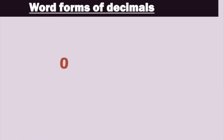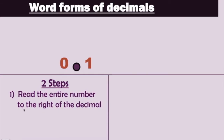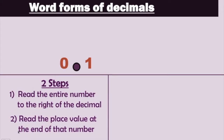So let's say that we have the decimal 0.1. Now keep in mind, when I say 0.1, I read it like that because it's a lot faster than the proper way, and because a majority of people in the world say it using the decimal point. But that's not the proper way to read a decimal. There are two steps: the first step is to read the entire number to the right of the decimal, and the second step is to read the place value at the end of that number.